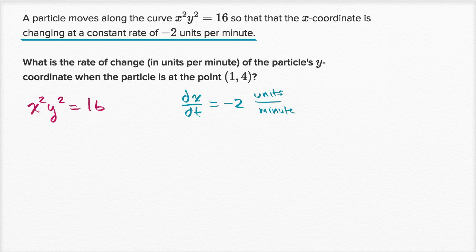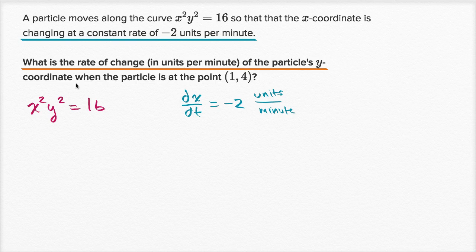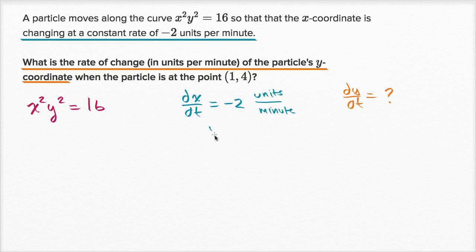And what they want us to figure out is what is the rate of change of the particle's y coordinate. So what they want us to find is: what is dy/dt? And they say when the particle is at the point one comma four — so when x is equal to one and y is equal to four.